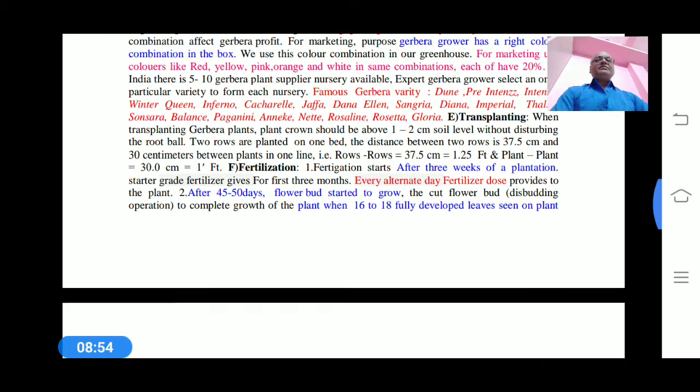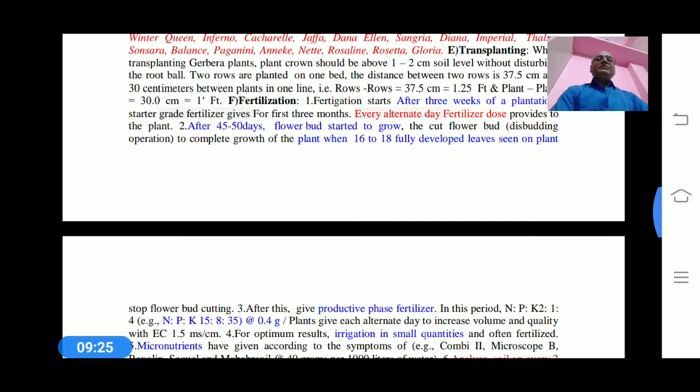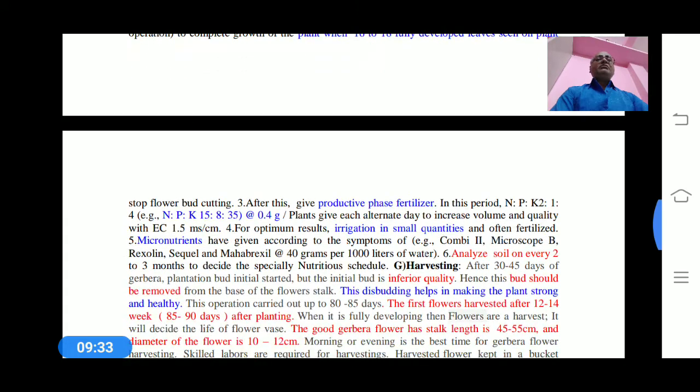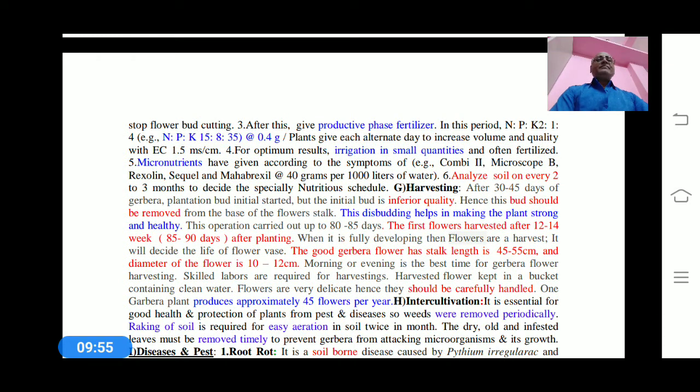Fertilization starts after three weeks of plantation. Grade fertilizer gives good results. The first three months are most important for fertilization. Every alternate day fertilization dose should be provided. After 45 to 50 days, flower buds start to grow. Cut flowers and this budding operation starts, and complete growth of the plant occurs when 16 to 18 fully developed leaves are seen on the plant body. Then stop flower bud cutting. After this, give productive phase fertilizers. NPK is most important, 19-19-19, and after that use alternate doses of nitrogen.